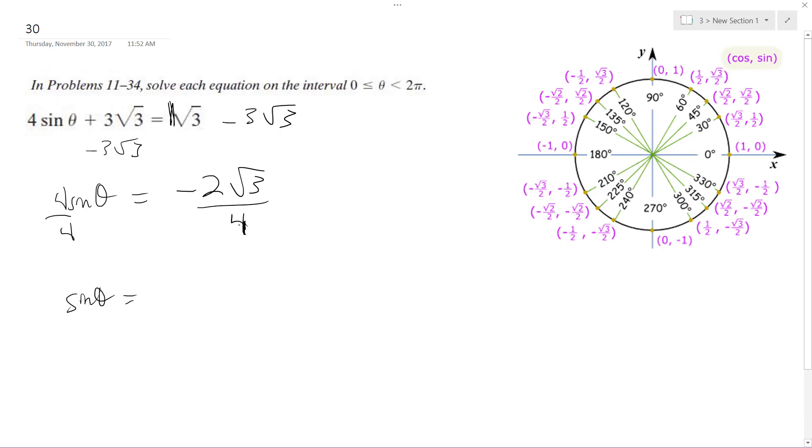Sine theta is equal to, and then I'm going to reduce this. This is 1, this is 2, I get negative root 3 over 2.